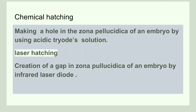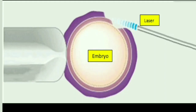Chemical hatching is a technique in which the zona pellucida is treated using chemicals — a hole is created in the zona pellucida of the embryo using an acidic Tyrode's solution. Laser hatching creates a gap in the zona pellucida using an infrared laser diode. This diagram shows the laser hatching technique, where a gap is created in the zona pellucida prior to embryo transfer.